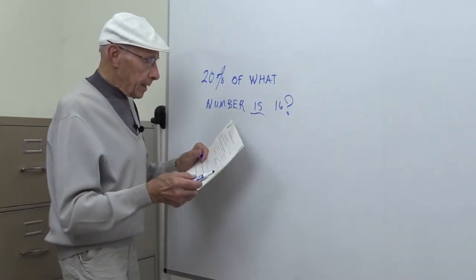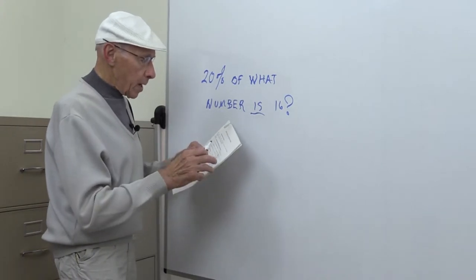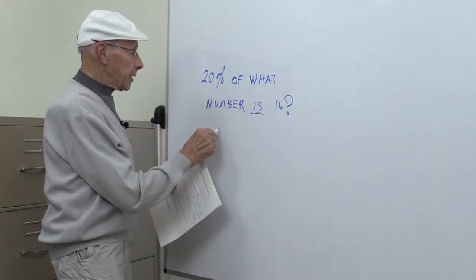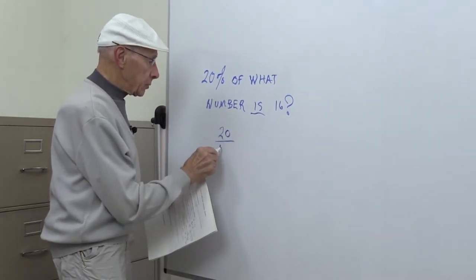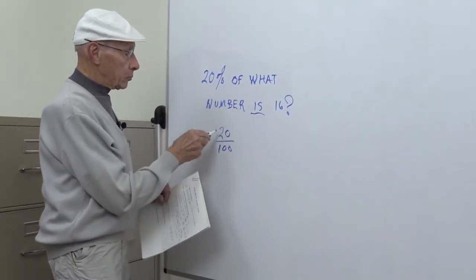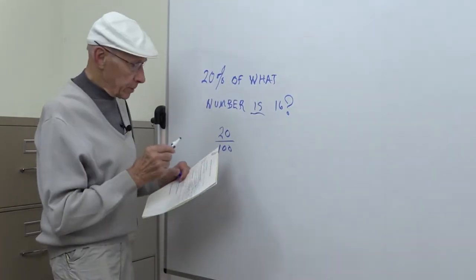So looking at this, if you want to just write it out, it says we'll take the 20% and change it to a fraction. Right, 20 over 100 is the same as 20%.